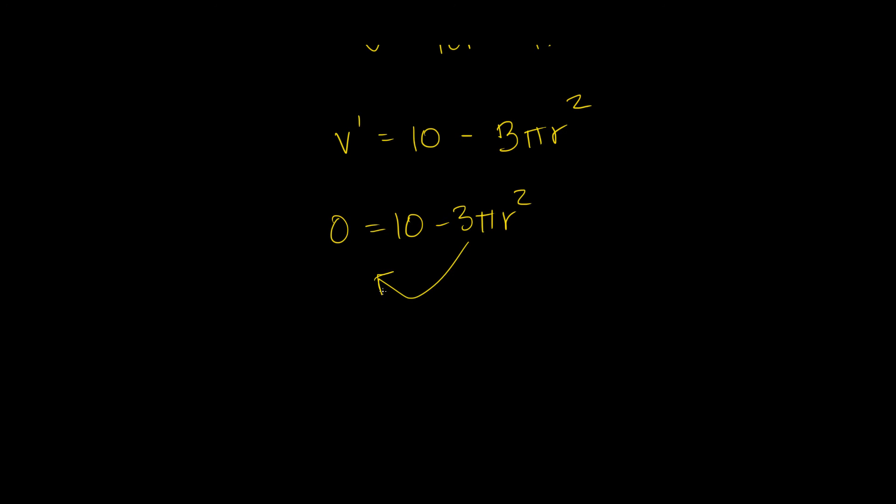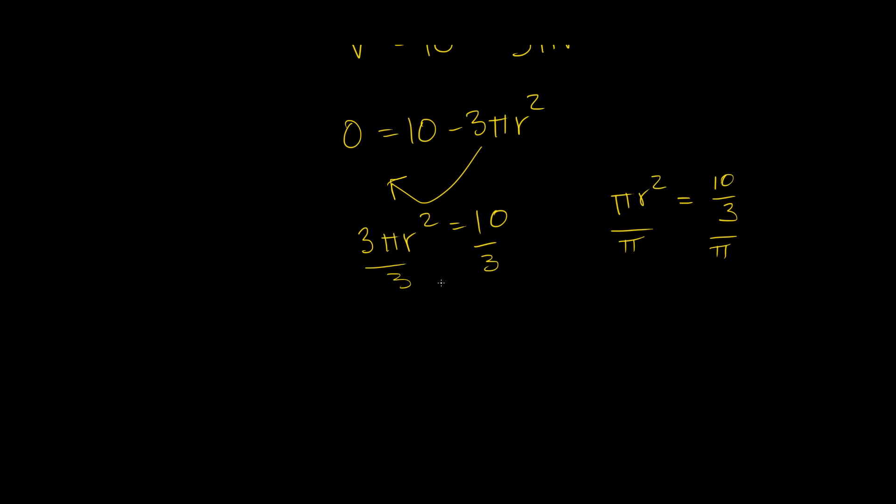So I'm going to bring this over to that side. I'm going to get 3 pi r squared equals 10. I'm going to divide both sides by 3, and then I'm going to get pi r squared equals 10 thirds. Divide both sides by pi as well. That's going to give me r squared is equal to 10 over 3 pi, and then I'm just going to square root both sides, and I'm going to get r is equal to plus minus the square root of 10 over 3 pi.